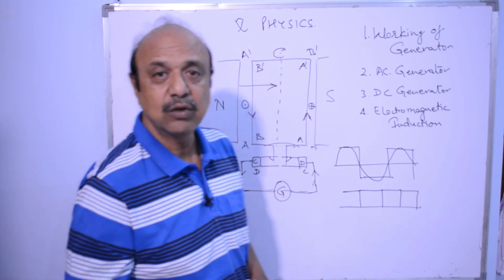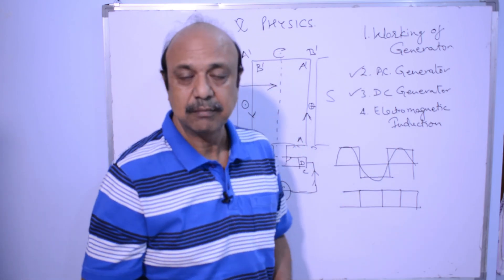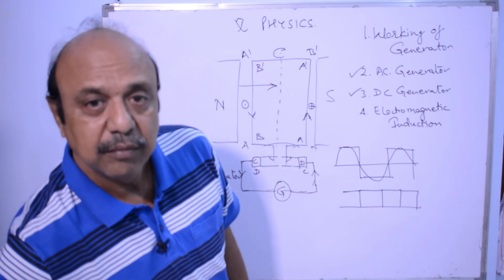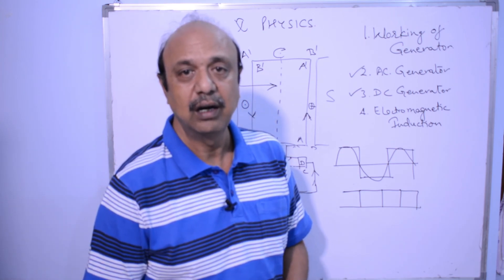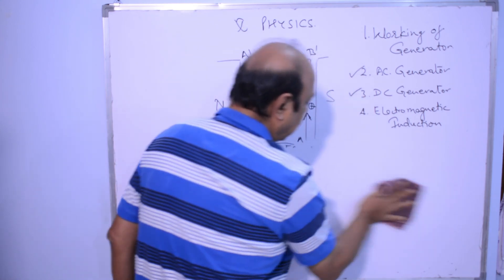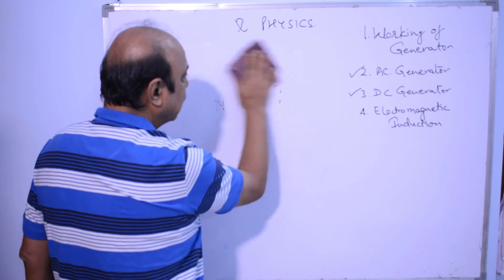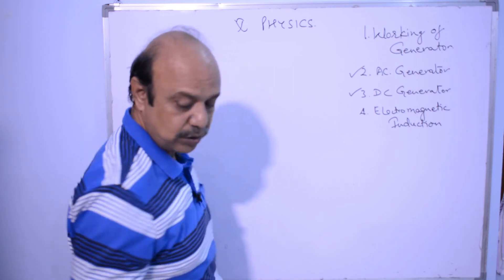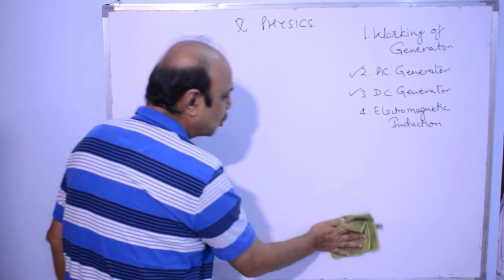The arrangement with a double slip ring is called an AC generator. So we have seen what is an AC generator and what is a DC generator. So far in this chapter, we have seen that if a current-carrying conductor is moved inside a magnetic field, it generates electricity. But if I move a magnetic field in the vicinity of a conductor, then also electricity is induced. The basic example we will take is a solenoid.